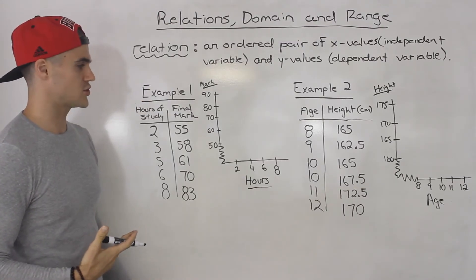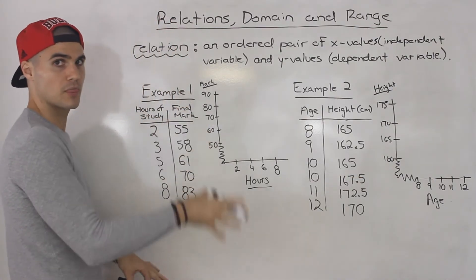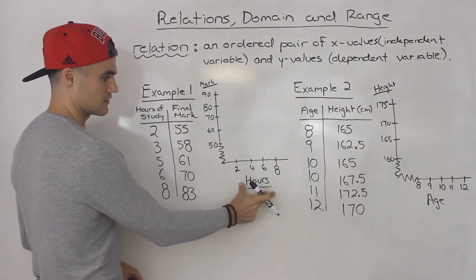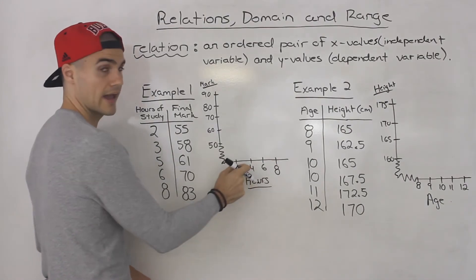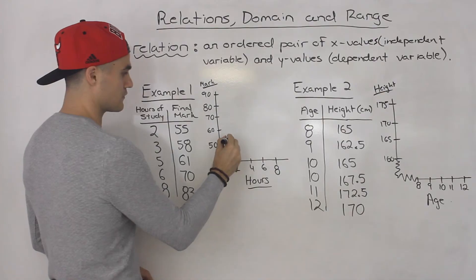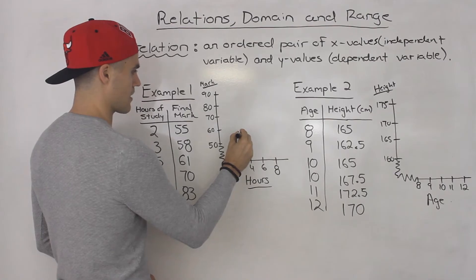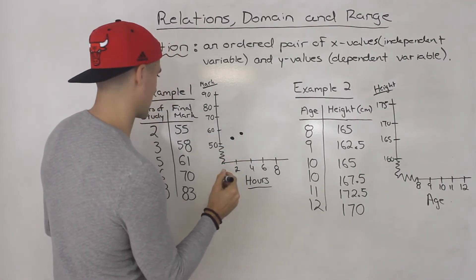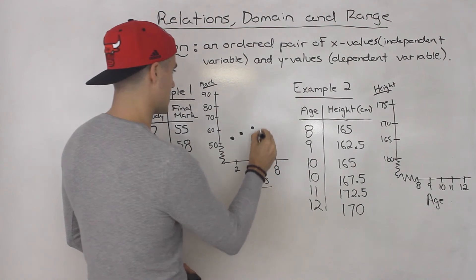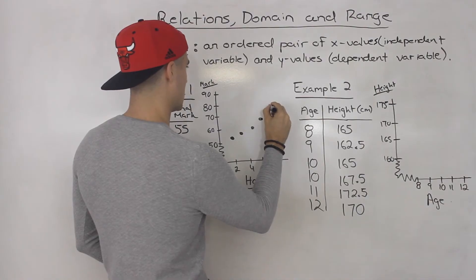The fourth most common way to represent a relation is with a graph. You just plot the points from the coordinates, mapping diagram, or table. The independent variable always goes on the x-axis, and the dependent variable always goes on the y-axis. So for example one: 2 and 55 is here, 3 and 58 is about there, 5 and 61 is over here, 6 and 70 is up there, and 8 and 83 is up there.